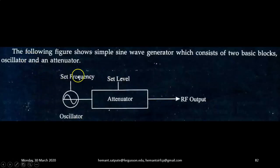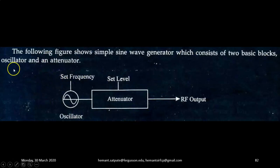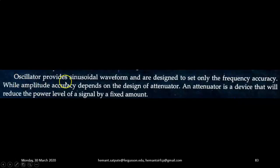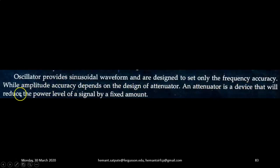The following figure shows a simple sine wave generator, which consists of two basic blocks: an oscillator and an attenuator. The oscillator generates an alternating waveform of a desired frequency, while the attenuator sets the output amplitude to a desired value, which is then used as a radio frequency output in many circuits. Oscillators provide sinusoidal waveforms and are designed to set only the frequency accuracy, while amplitude accuracy depends on the design of the attenuator. An attenuator is a device that reduces the power level of a signal by a fixed amount.